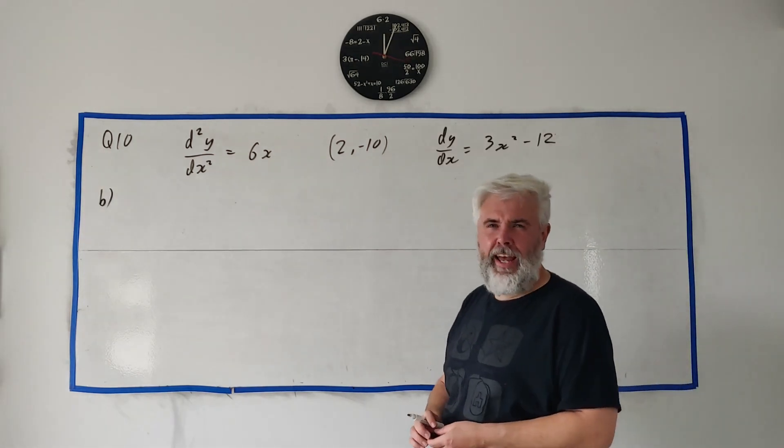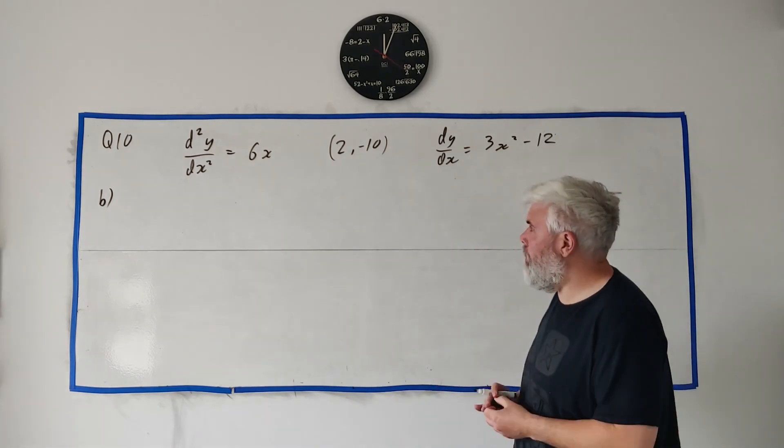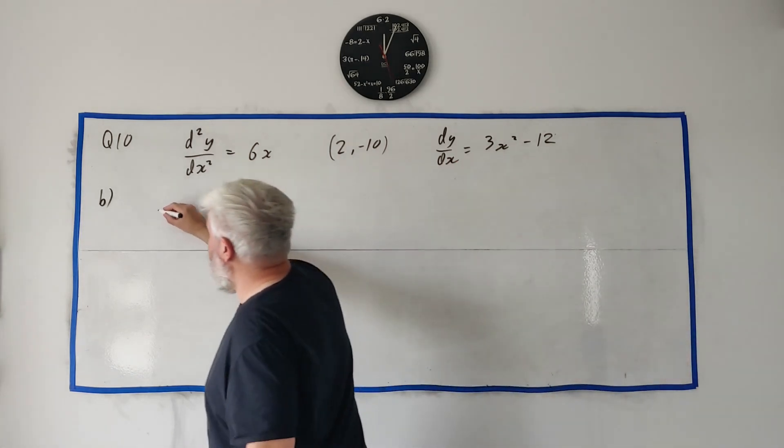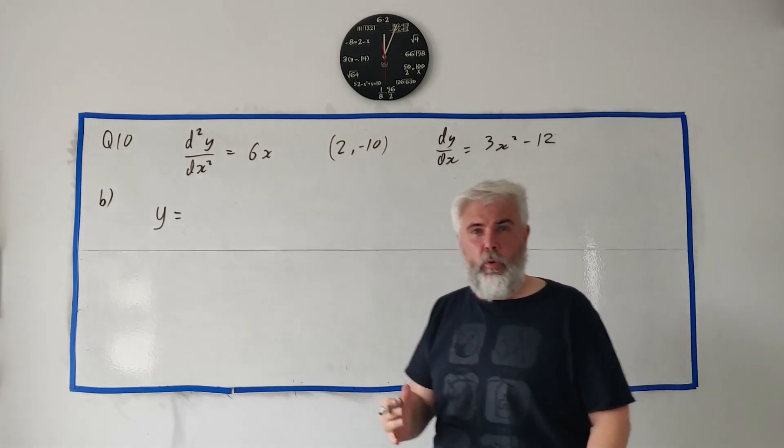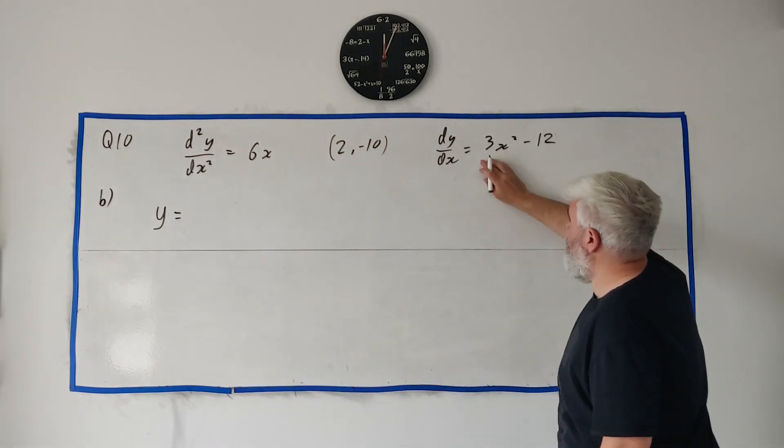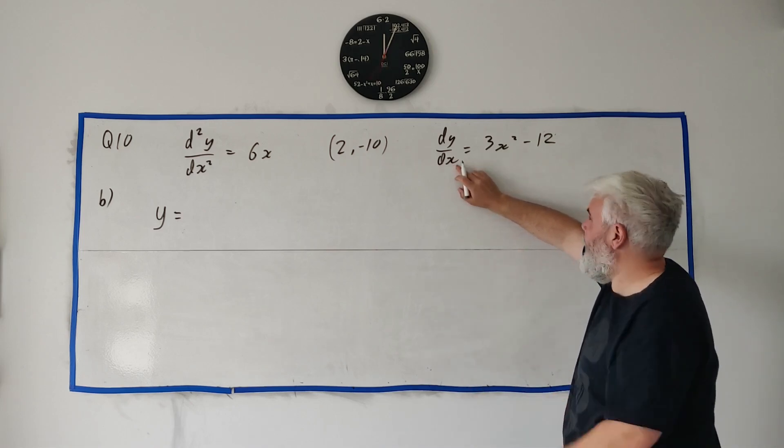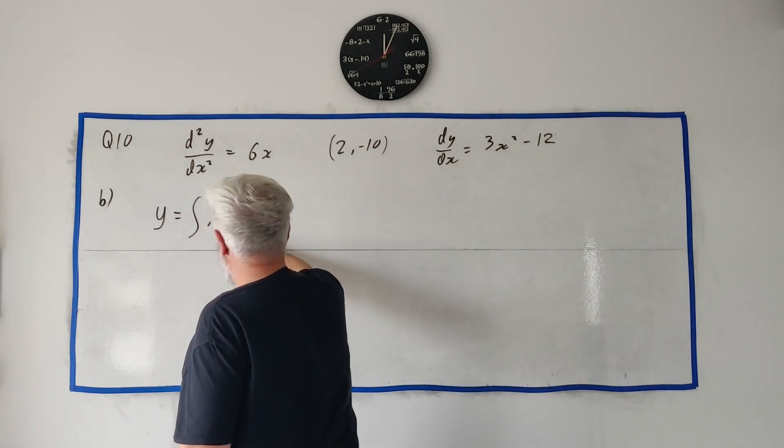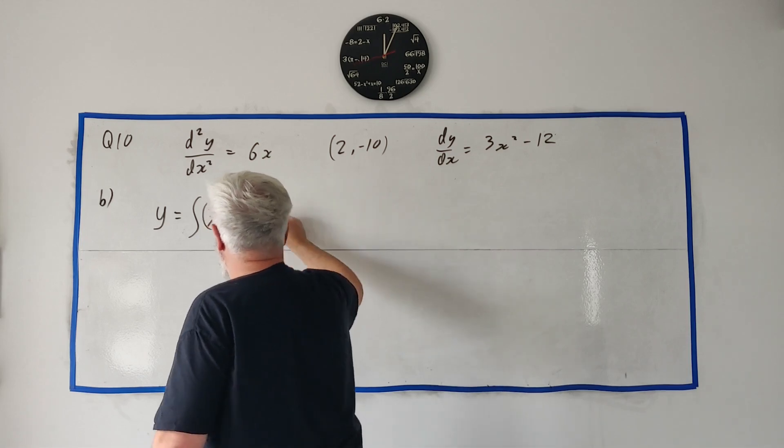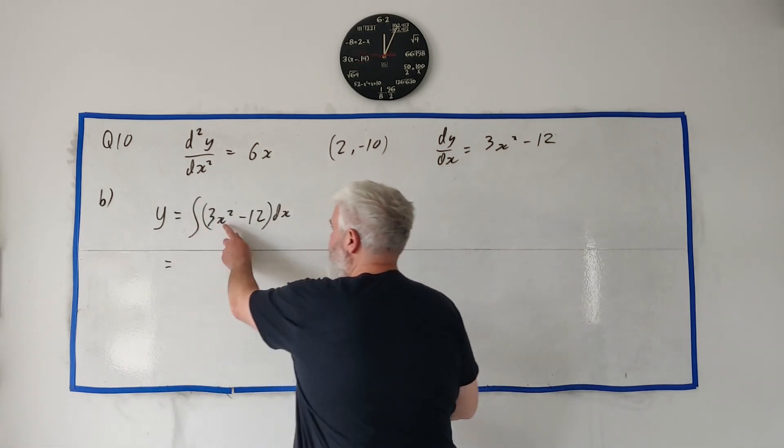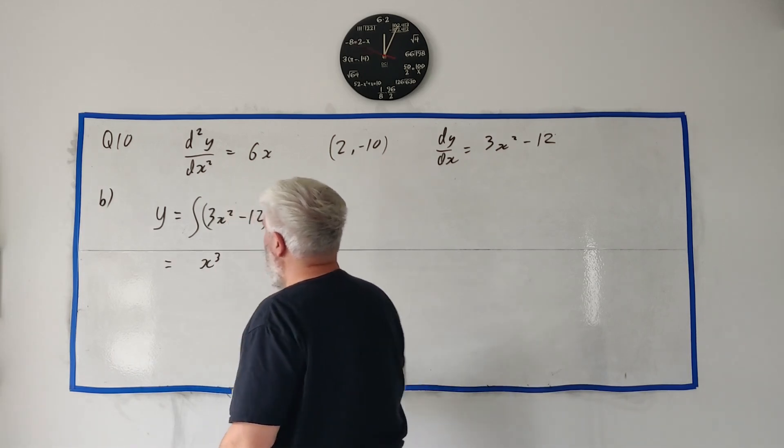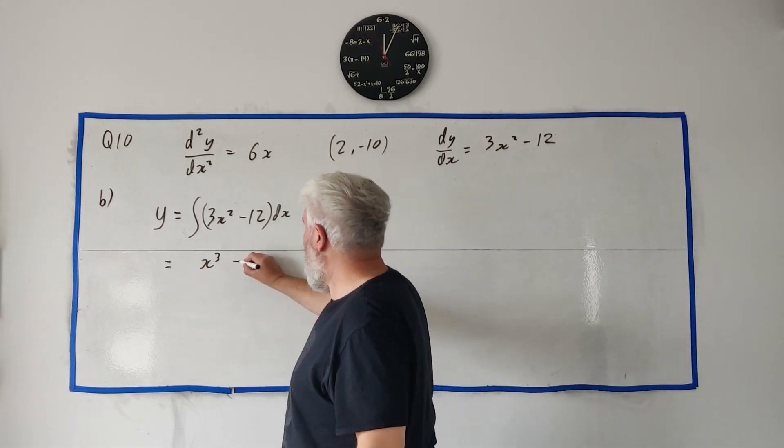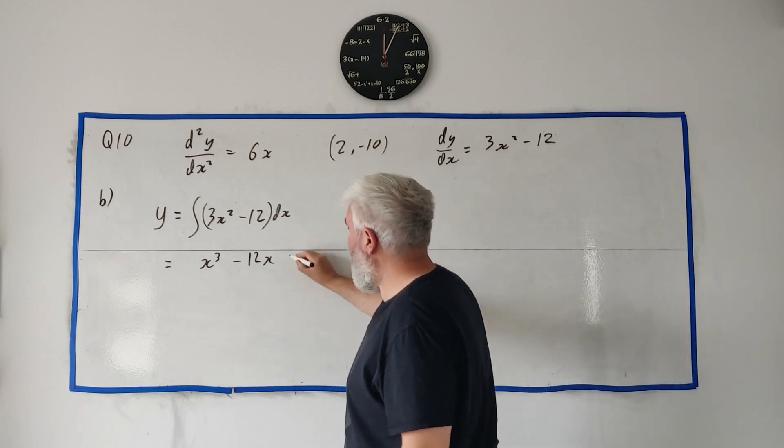Part b of this question asks us to find the equation of the curve. The curve that has the second derivative of this, the first derivative of this. So we basically want to find y. That's what that means. Find the equation of the curve, y equals. So just again, we integrate this one. I won't write it out as long as I did last time. We integrate dy/dx. So this is equal to the integral of 3x squared minus 12 with respect to dx. That equals, let's see, x squared becomes x cubed and we end up dividing by the three. But there's a three here already. Three divided by three cancels. Minus 12 becomes minus 12x and a constant appears. Again, we've used c1, so let's use c2.